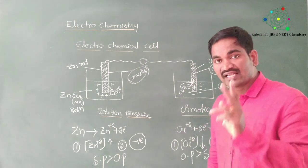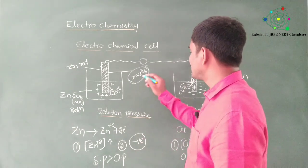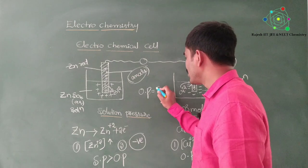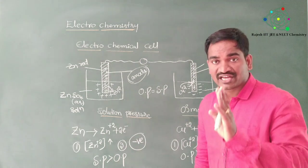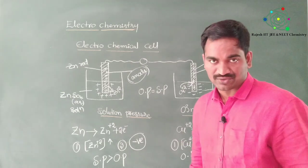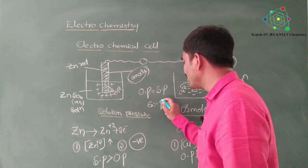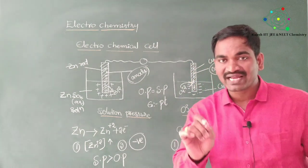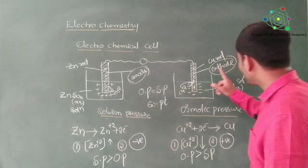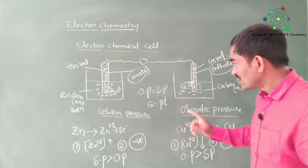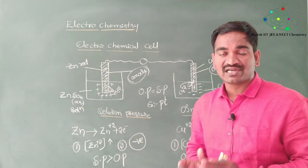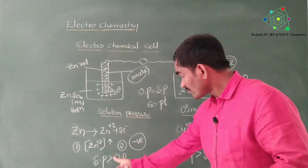You may have one doubt: what if both osmotic pressure and solution pressure are equal? If both are equal, that electrode is nothing but an inert electrode. One example of an inert electrode is platinum. So to summarize: anode means where solution pressure is very high; cathode means where osmotic pressure is very high; and where both are equal, that electrode is an inert electrode.